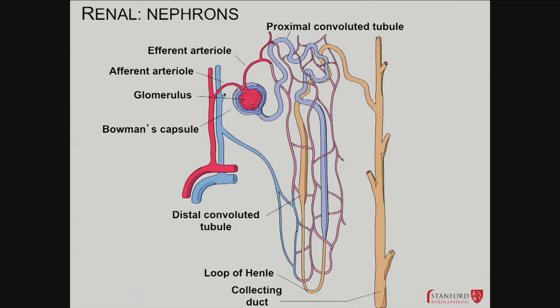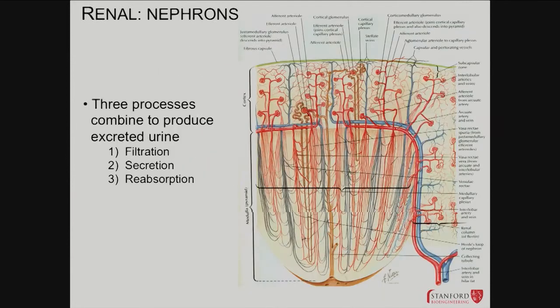Here's a single nephron in higher detail. You can see the afferent arteriole, efferent arteriole, the glomerulus — which is what the structure is called — and the Bowman's capsule. You've got the proximal convoluted tubule coming right off Bowman's capsule, the loop of Henle, the distal convoluted tubule, and the collecting duct, which goes out to the ureter. Now adding in all the other nephrons, you can see all the loops of Henle at different depths, all extending down into the depth of the medulla.